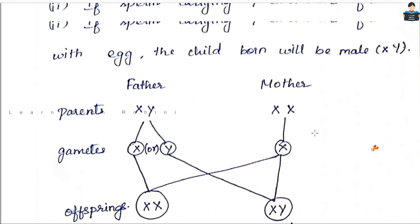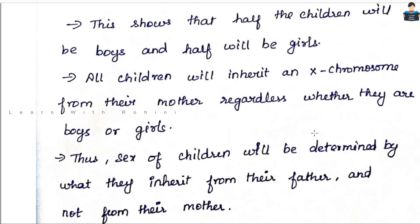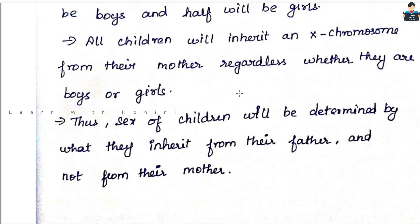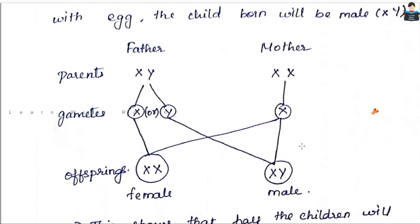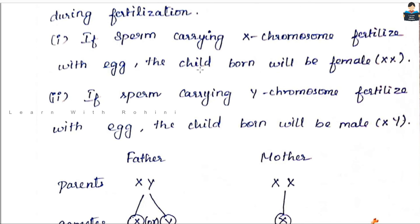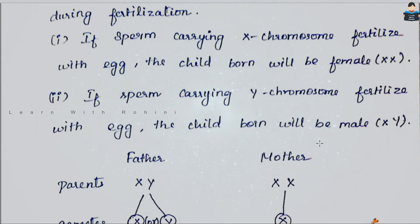This is sex determination in human beings — very simple and easy. The lesson is complete. The evolution portion is deleted. This part is for term exams. If you like, share and subscribe. Thank you.